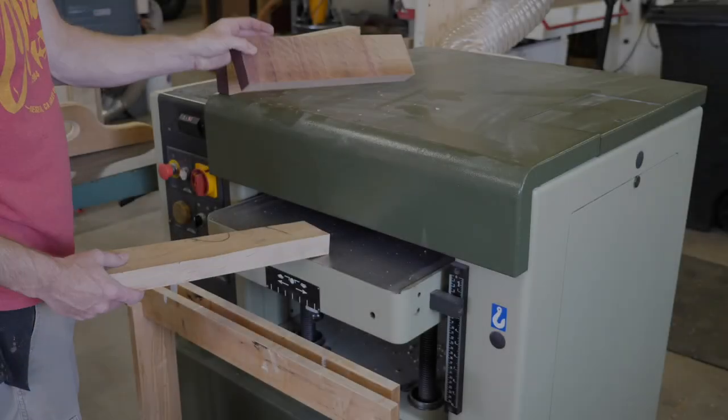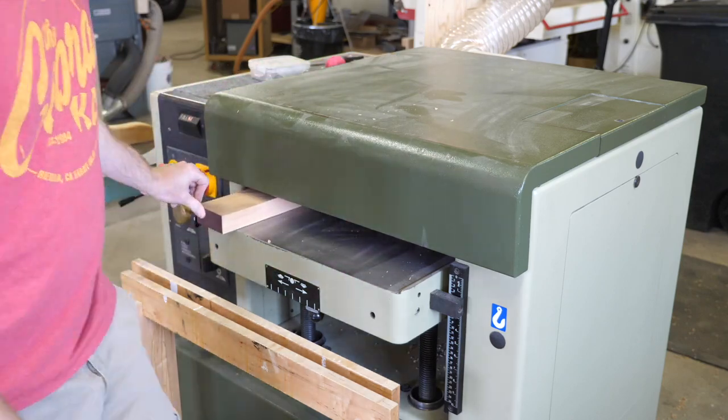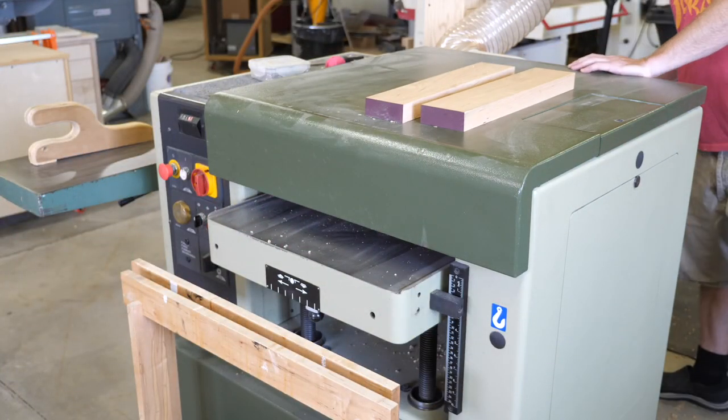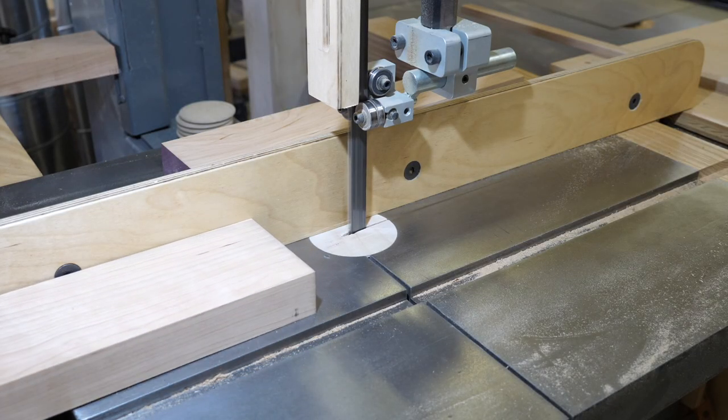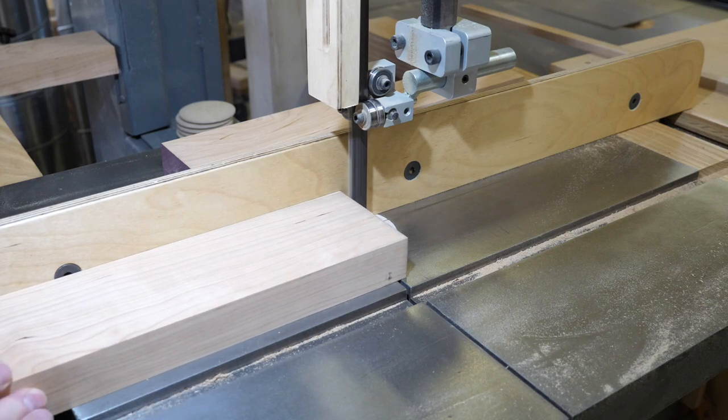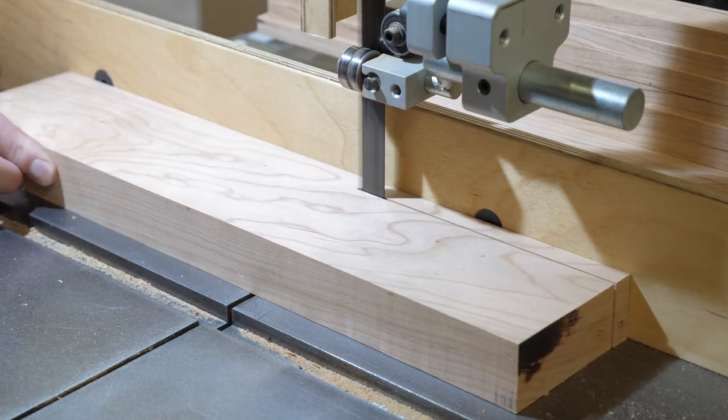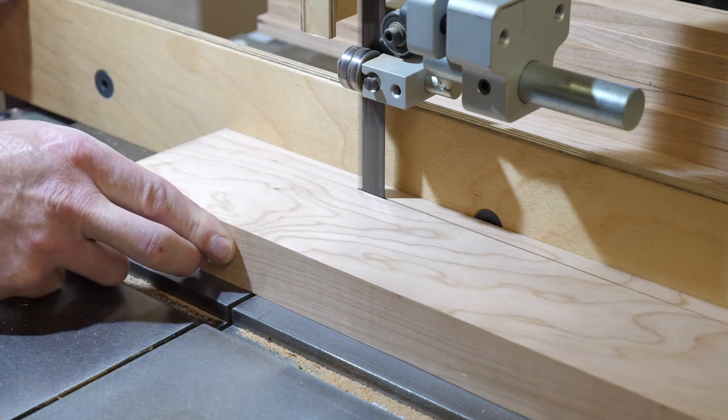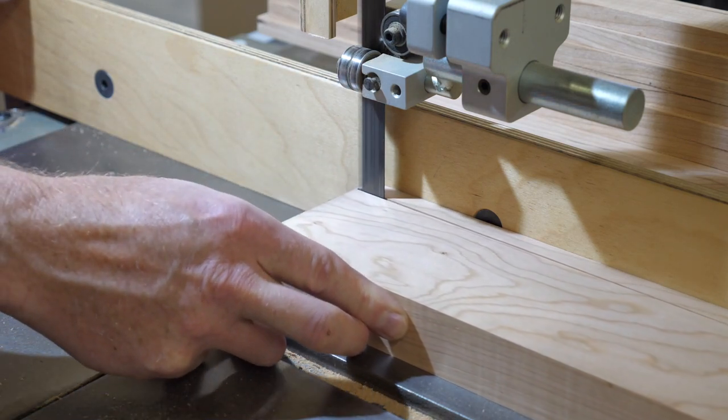With one flat face and one square edge, I head to the planer to make the second face flat and parallel to the first one. Finally, it's back to the bandsaw to rip the parts down to size.